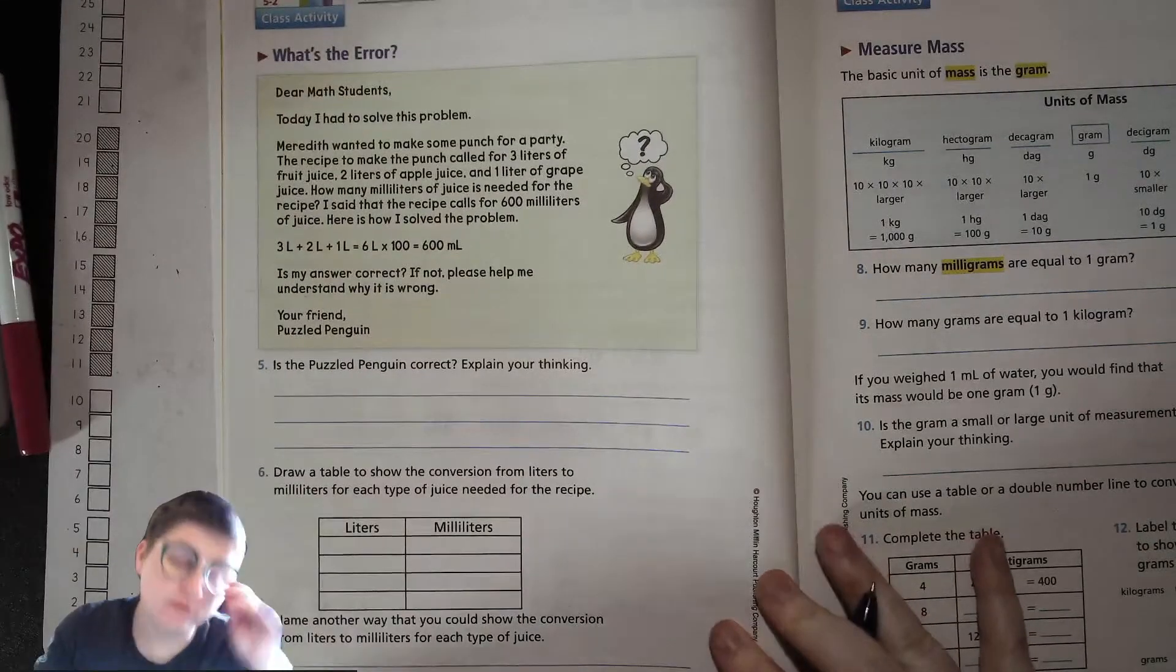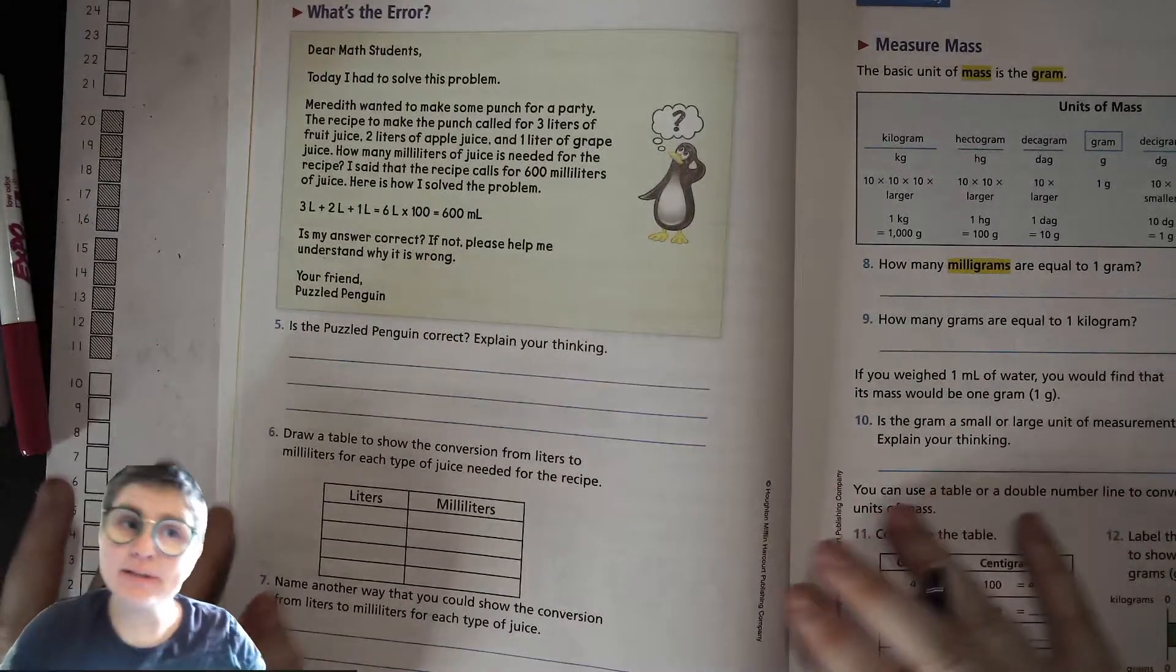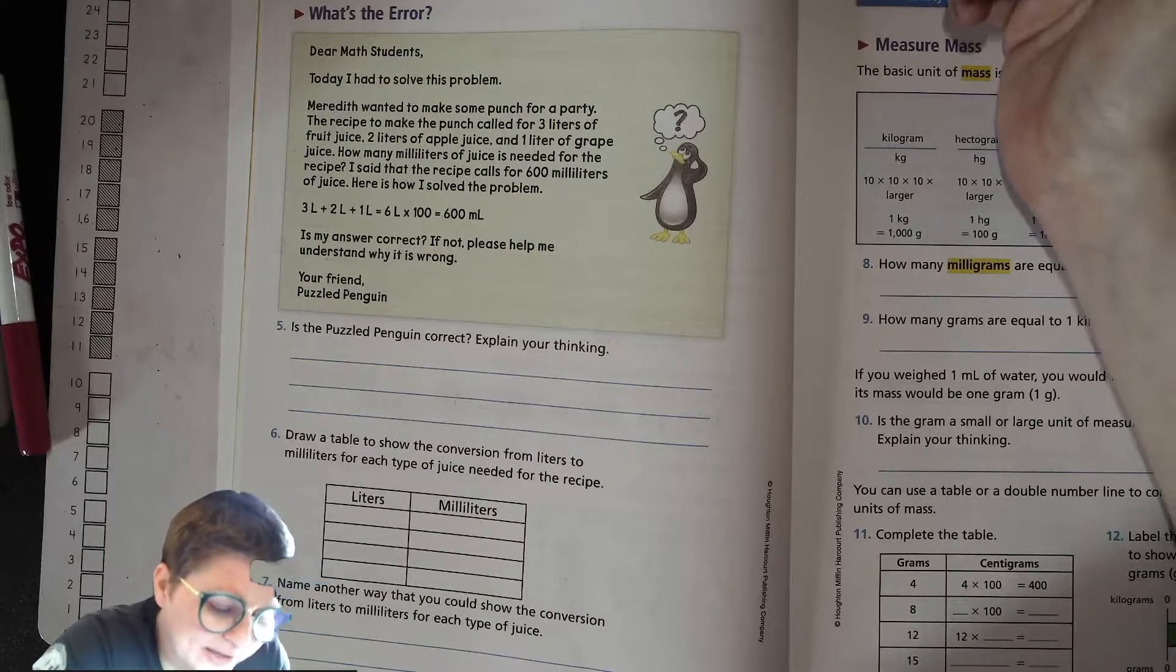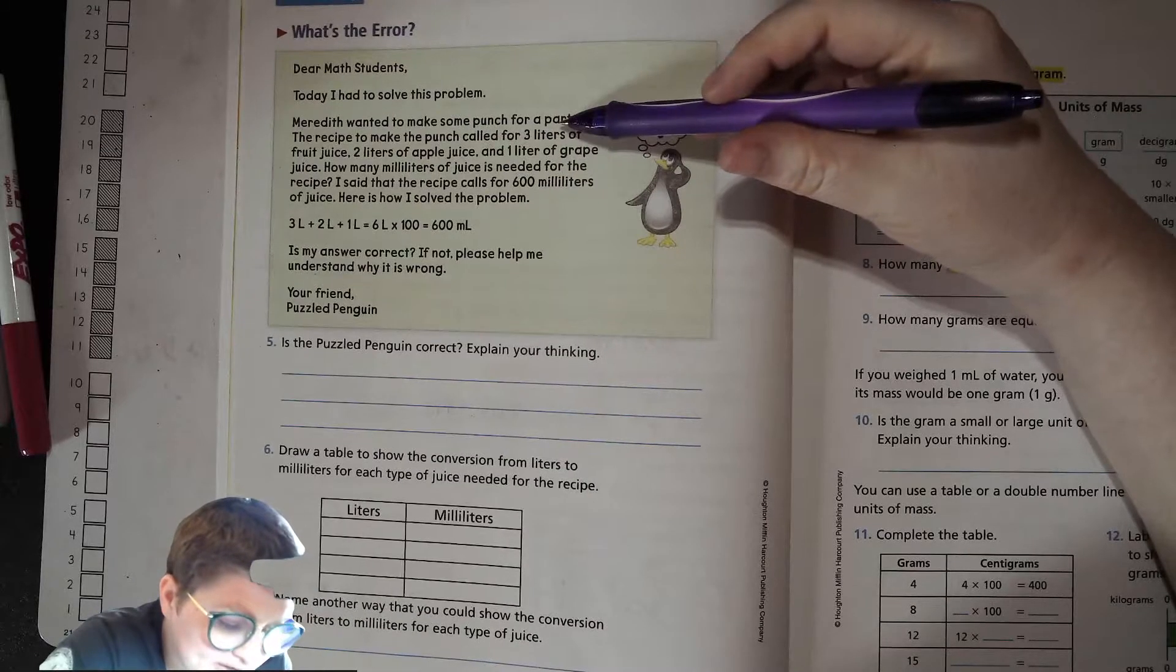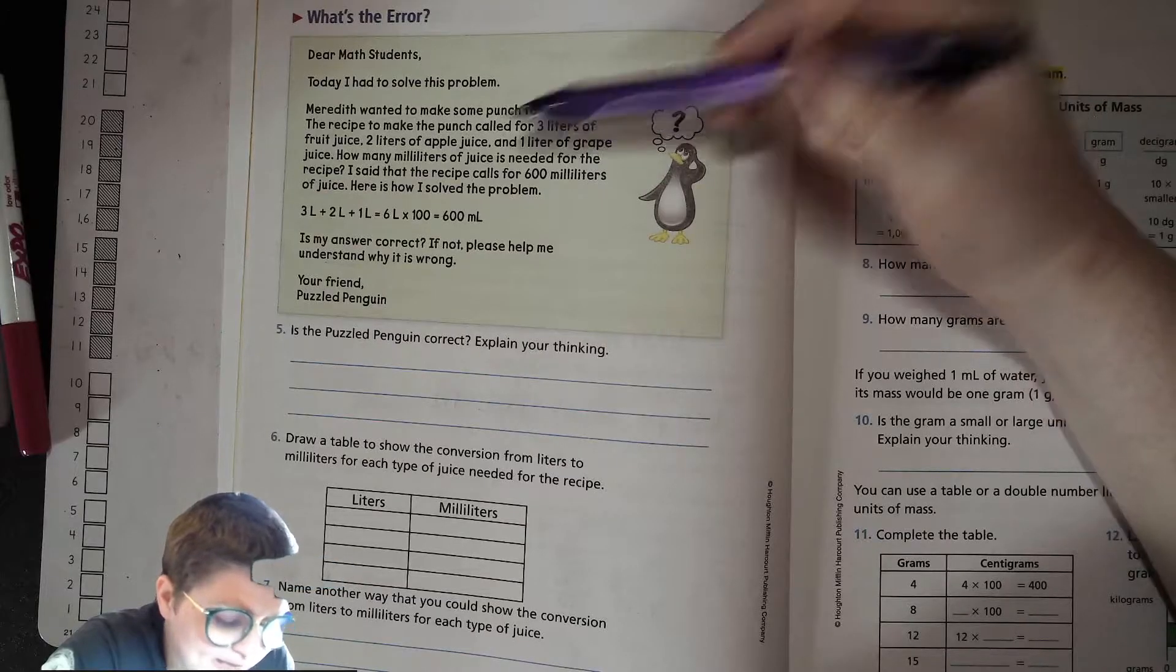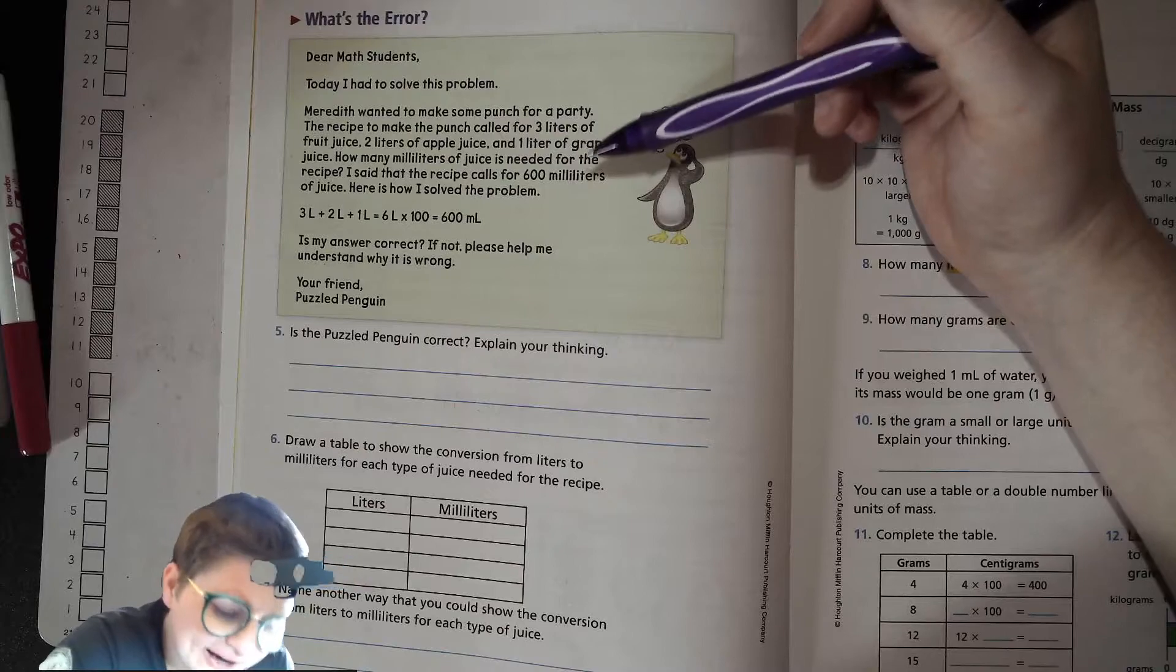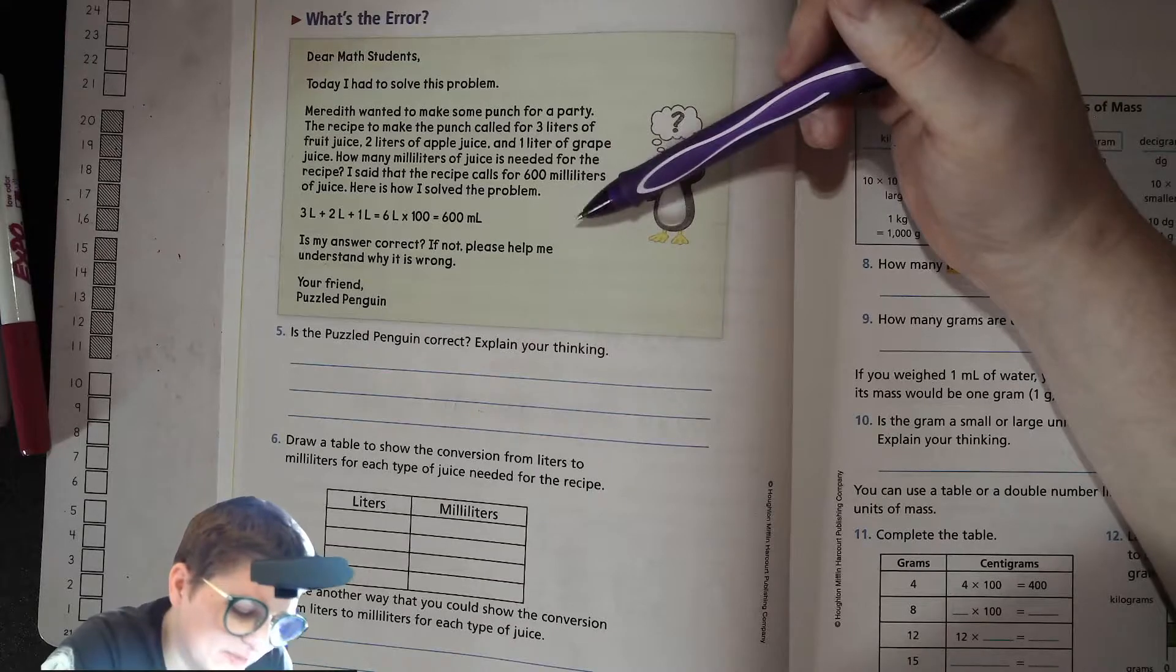Got a puzzle penguin. Remember, the reason we have puzzle penguin is so you can identify a commonly made mistake. Dear math students, today I had to solve this problem. Meredith wanted to make some punch for a party. The recipe called for three liters of fruit juice, two liters of apple juice, and one liter of grape juice. How many milliliters of juice is needed for the recipe? I said the recipe calls for 600 milliliters of juice.